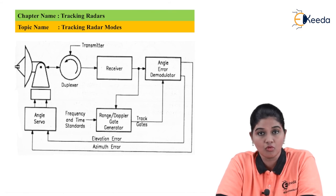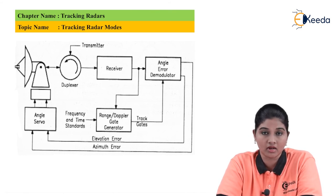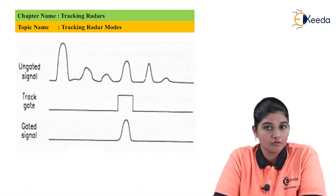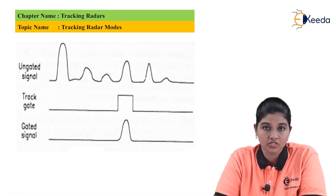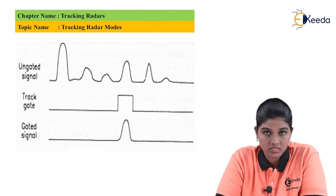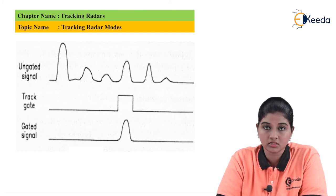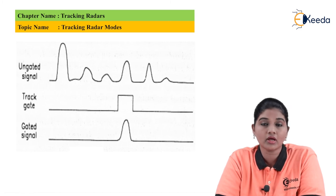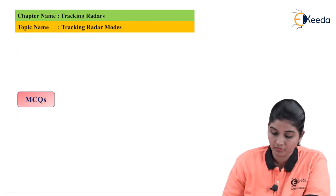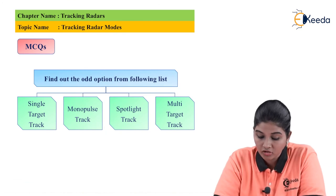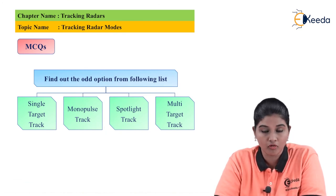That covers the various tracking modes used in the tracking radar system. Before moving to MCQs, let's look at the waveform used for describing the generation of the gating pulse. The ungated signal is given, and when the track gate signal is applied, the gated signal is generated. Question one: find out the odd option from the following list — single target track, monopulse track, spotlight track, multi-target track.